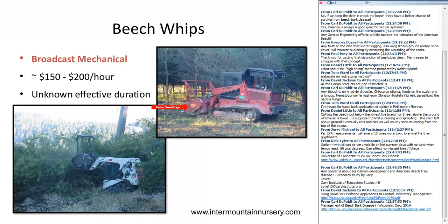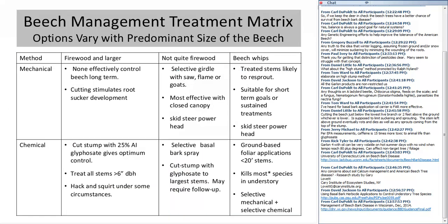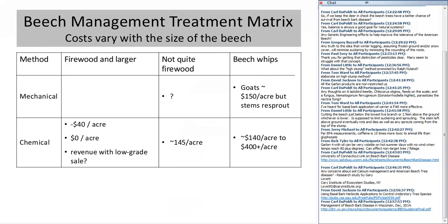We can use those same mower heads to do a broadcast mechanical treatment. I plan to do some research this summer looking at the long-term effects and re-sprouting using different kinds of cutter heads. The costs are somewhere in the $150 to $200 per hour. As we move towards the smaller stems, we have an increasing variety of treatments we can apply, but also greater costs. With larger trees, there's potential to generate some revenue by selling and utilizing the low-grade material being cut. When we get to smaller stems — with greater capital costs, greater labor, more chemical, more handling time — the costs go up.